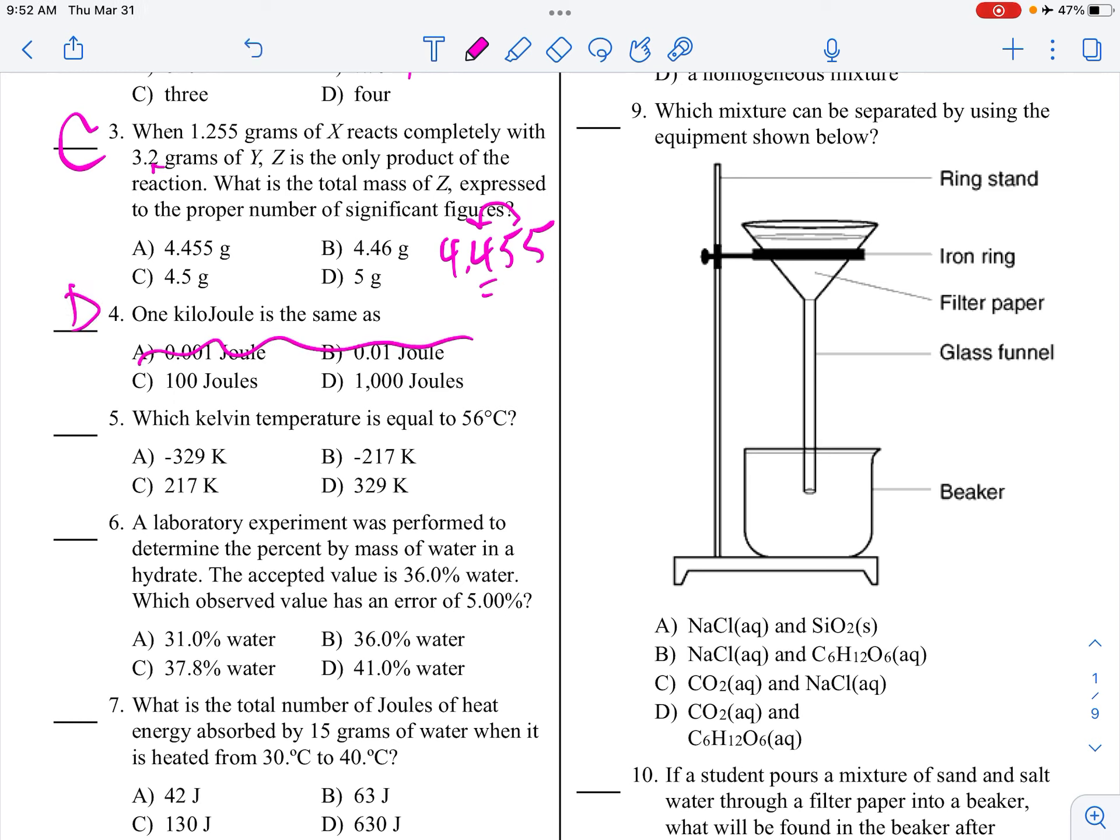Which mixture can be separated using the equipment below? Oh, so again, we've got table salt. This is sand. This is table salt aqueous. This is a sugar solution. And we've got dissolved carbon dioxide. So if you want to separate something using a filter, you have to have solids. So it's got to be choice A.